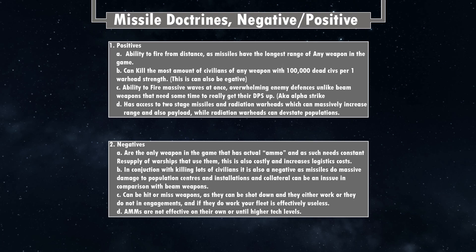Negative D: AMMs — anti-missile missiles — can be effective in conjunction with other weapons but are not effective on their own, or until higher-level techs. AMMs have a much lower chance of destroying large quantities of missiles compared to gauss cannons or rail guns, and at lower tech levels you need every bit of MSP on those AMMs just to make them somewhat effective. That covers missile doctrine.